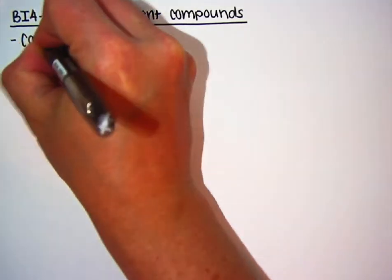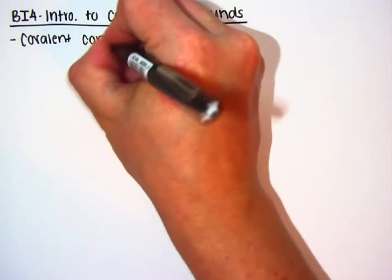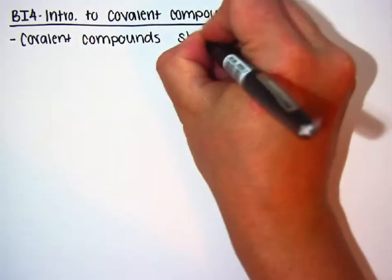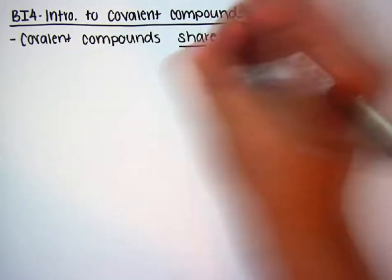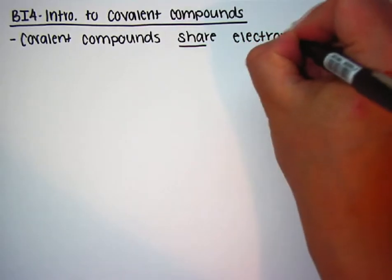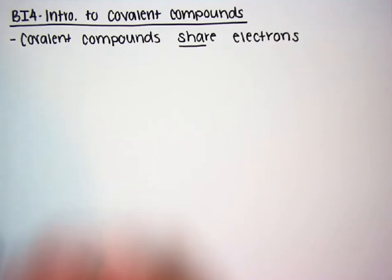Covalent compounds share electrons. That is the big difference between covalent compounds and ionic compounds. Ionic compounds involve the transfer of electrons — the metal loses the electron, the non-metal gains it. Covalent compounds are a group of elements that share electrons.